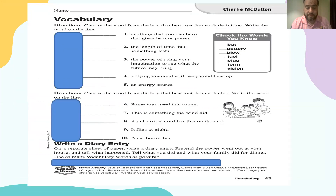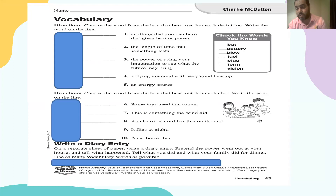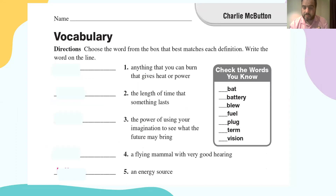Finally, for the writing activity, pretend the power went out at your house. Now you are going to behave like the hero of the story — Charlie. So what would you do if suddenly the power went off? We would like you to use as many words as you learned from the story in your journal or diary entry. Thank you so much, and good luck, my friends. See you!